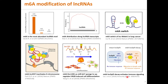M6A epitranscriptomic modification is not limited to mRNA. Non-coding RNAs or lncRNAs can also be modified. Among the different RNA modifications, M6A is ranked the most common lncRNA modification. Unlike mRNA, the M6A site distribution in lncRNA is relatively even across the RNA length — that is, there is no stop codon to be concentrated around.